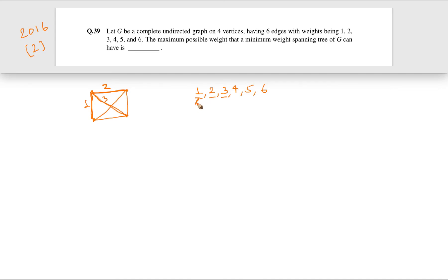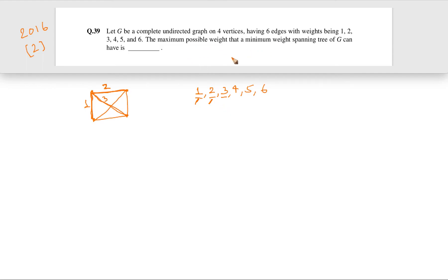In Kruskal's algorithm, we start from the smallest edge and keep adding edges. The only condition under which a particular edge is not added to the MST is when adding that edge forms a loop — that violates the tree condition, so that edge is skipped. We need to create a situation where we can skip an edge and use a heavier one instead.